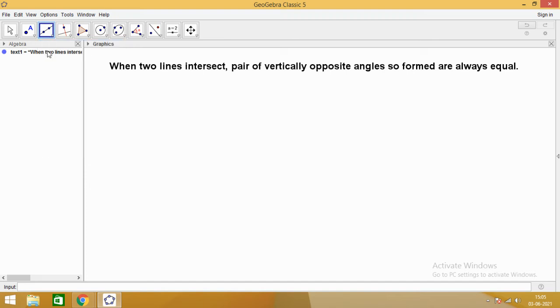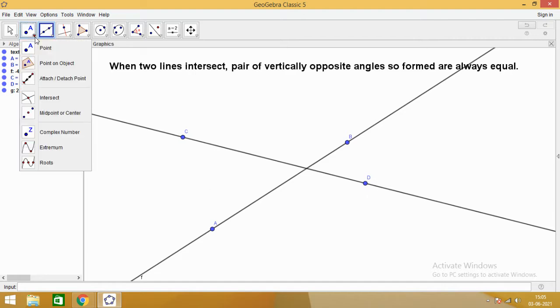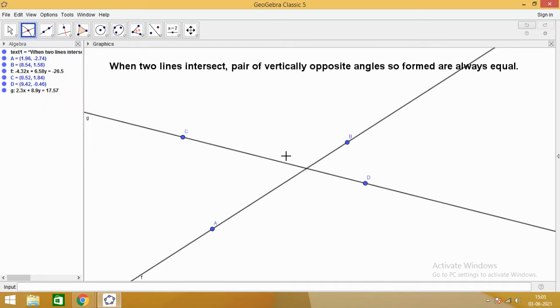Let us do the verification. So here we are going to take two lines. AB is one line and we have another line CD. AB and CD, they intersect each other at a point E.